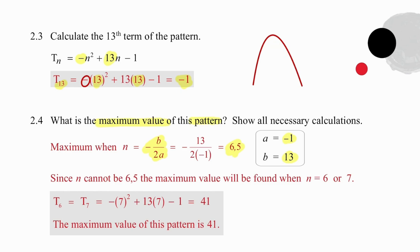Now we know that n cannot be 6.5, so we choose the integers closest to 6.5. Because 6.5 is exactly halfway between 6 and 7, we don't have to test to see which one will work. Because of symmetry, we know that both 6 and 7 will produce the same answer. In a different situation, we might need to take the integer on either side and check to see which one produces the maximum. In this case, we are going to use 7, and when we substitute 7, we get 41. So we are confident that the maximum value of this pattern is 41.